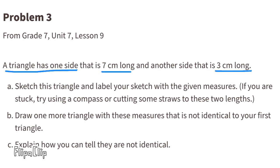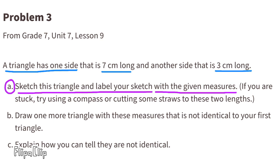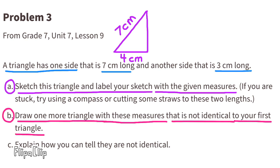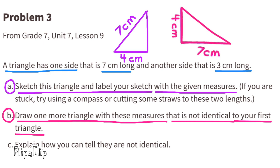A triangle has one side that is 7 centimeters long and another side that is 3 centimeters long. A: Sketch this triangle and label your sketch with the given measures. If you are stuck, try using a compass or cutting some straws to these two lengths. Here's one example of what this triangle could look like. B: Draw one more triangle with these measures that is not identical to your first triangle. Here's another example of a triangle you could draw using these same measures.